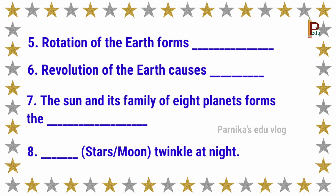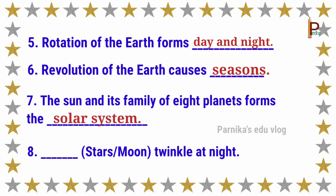Fifth: rotation of Earth forms — day and night. Sixth: revolution of Earth causes — seasons. Seventh: the sun and its family of eight planets forms the — solar system. Eighth: stars twinkle at night.